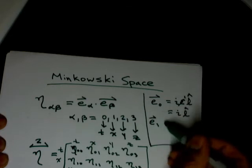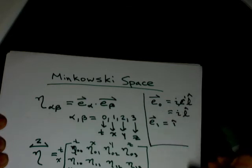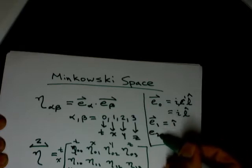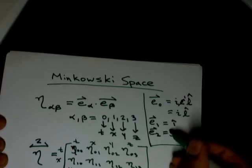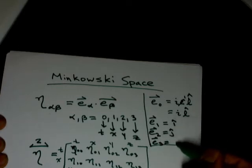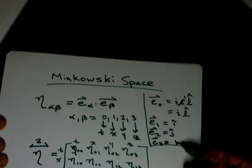And our e sub 1, which is going to be i hat, which is the unit vector in the x direction. E sub 2, which is the unit vector in the y direction. And e sub 3 is going to be a unit vector in the z direction, which is k hat.